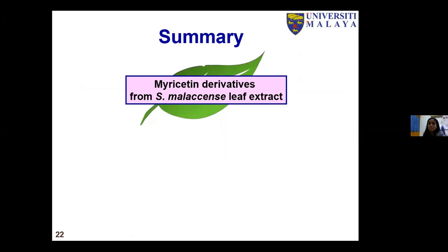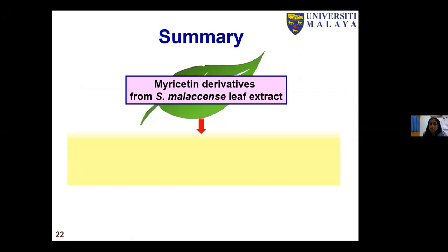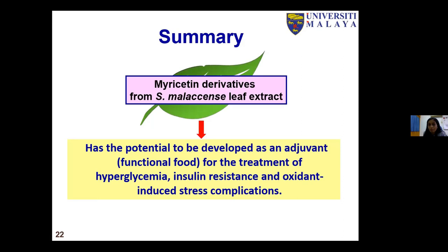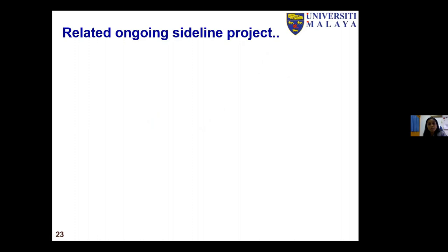In summary, myricetin derivatives from Syzygium malaccense leaf extract showed potential to be developed as a nutraceutical functional food for the treatment of hyperglycemia, insulin resistance, and oxidative stress complications, which we predict should be useful for the management of diabetes and related complications. We wanted to address some challenges pertaining to the nutraceutical application of the myricetin derivatives.